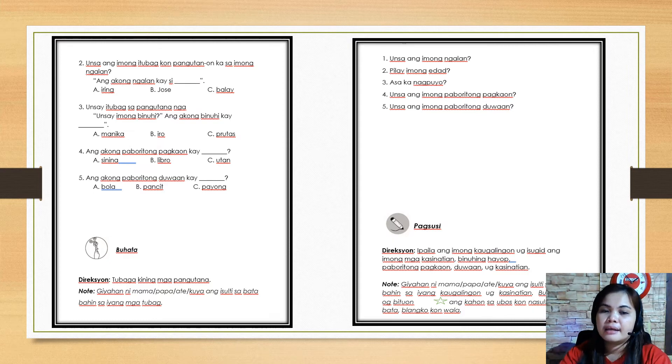Choose the correct answer. Number three: what will be your answer if the question is what is your pet? Ang akong binuhi kay - my pet is A: manika or doll, B: iro or dog, C: prutas or fruit. Number four: ang akong paboritong pagkaon kay - my favorite food is A: earring or cat, B: libro or book, C: utan or vegetables.